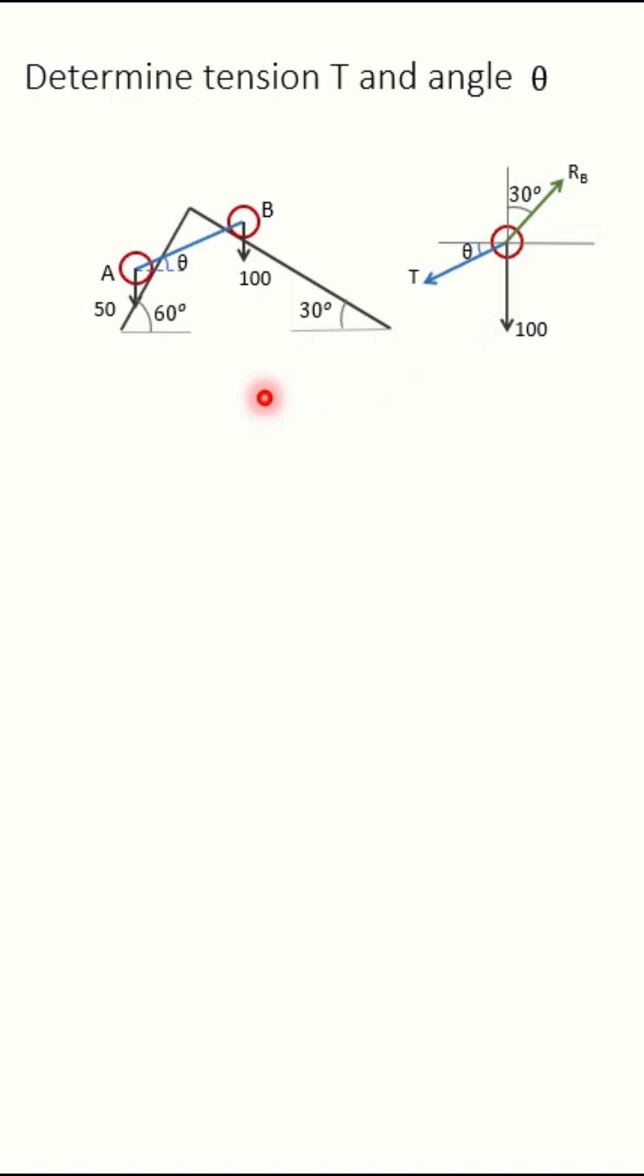For that we will draw free body diagram of these two rollers together. Weight of these two rollers 150 N. Now reaction at this point RB which is making angle 30 degree with vertical. And reaction at this point RA which is perpendicular to surface. So this RA should make angle 60 degree with vertical.